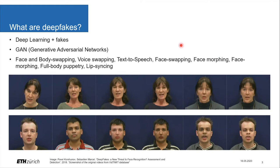There are different kinds of deepfakes: face and body swapping, voice morphing, text to speech, face swapping, face morphing, full body puppetry, and lip syncing. Lip syncing is what we saw earlier in the Obama video. The technique behind it is that you don't change everything about the video and generate it from scratch, but only change the lip part of the face and sync it to your own lips or the actor who's speaking for Obama.